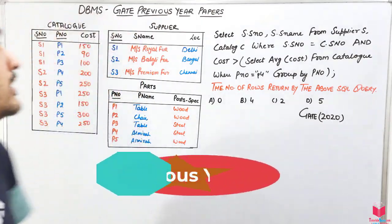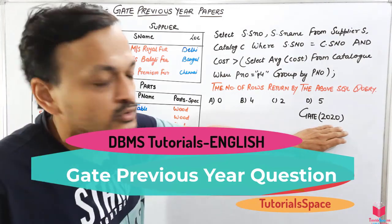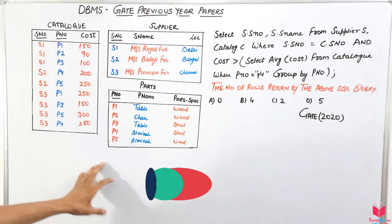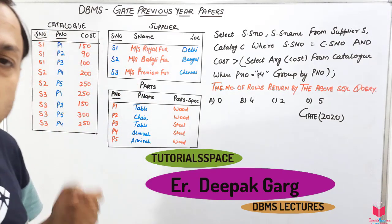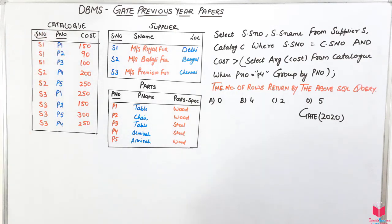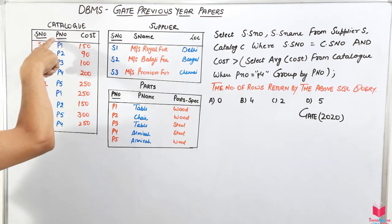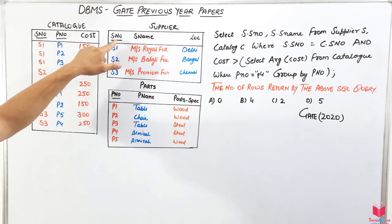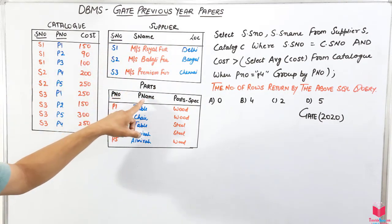Hello everyone, today we will discuss a DBMS GATE previous year question paper. This question came in 2020 and is based on an SQL query. There are three tables: catalog, supplier, and parts, with their respective attributes. The underlined attributes are the primary keys or foreign keys. The catalog table has s_number, p_number, and cost. The supplier table has supplier number, supplier name, and location. The parts table has p_number, p_name, and part specification.